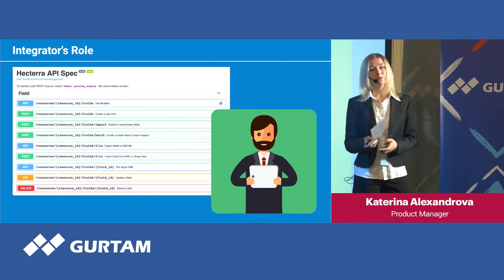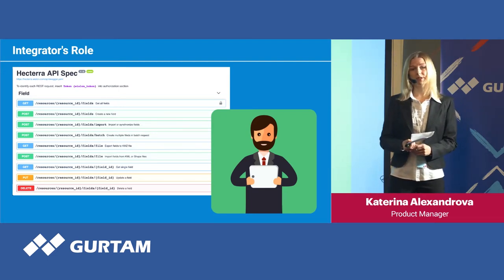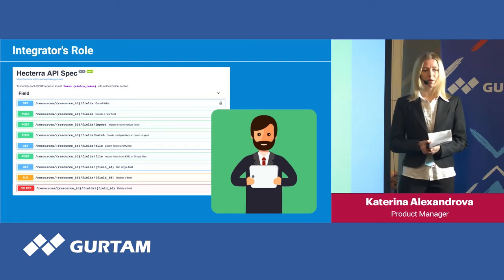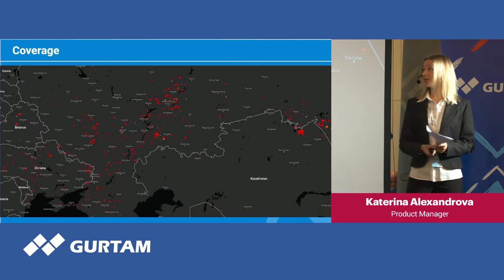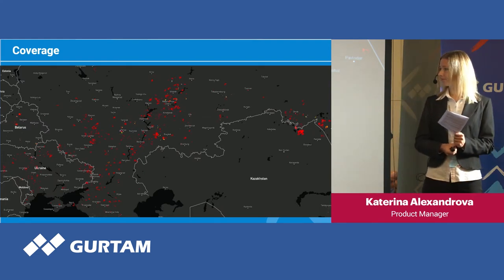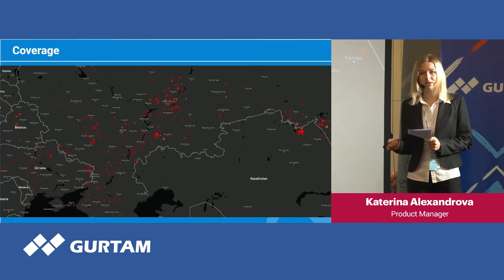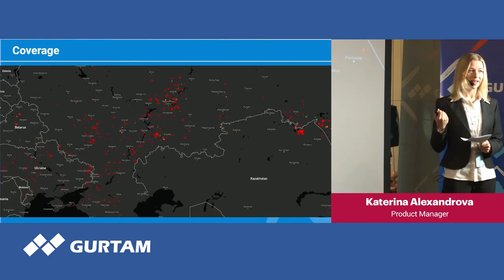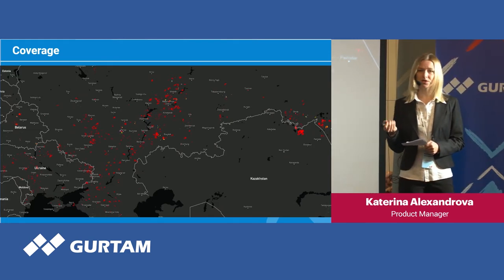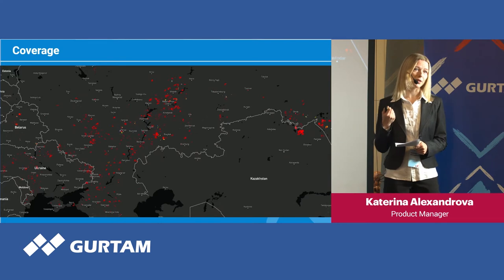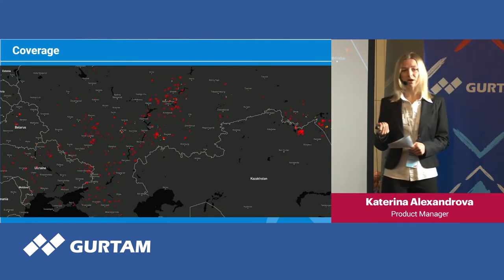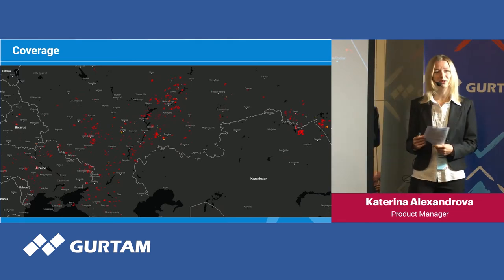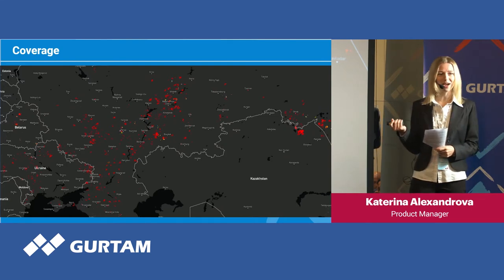It has been just two months since we released Hectera and approximately half a year since we started beta testing, but already we have some impressive results. This map shows fields created by users in Hectera. The region of the world with the biggest number of fields — at least for now — is Belarus, Ukraine, Russia, and countries of Eastern Europe. But we also have fields in Africa, Latin America, Canada, and other parts of the world. I would encourage you to join the club and make your own contribution to this map — maybe at the next conference, I will be showing a different part of the world as most active in Hectera.